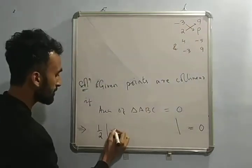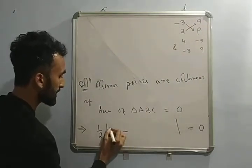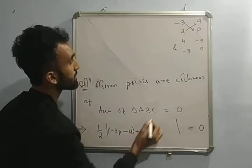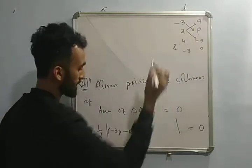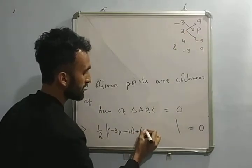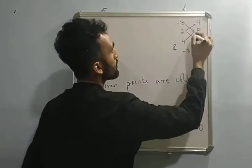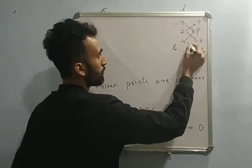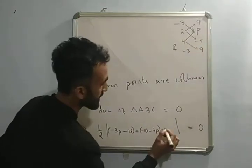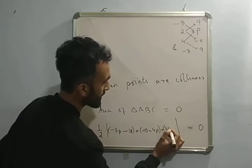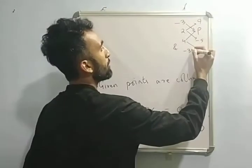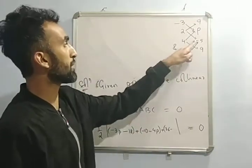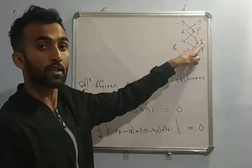Cross multiply: minus 3 into P is minus 3P. Subtract the cross: 2 nines are 18. Plus, 2 into minus 5 is minus 10. Minus, 4 into P is 4P. Plus, 4 nines are 36. Minus formula: minus 3 into minus 5 is 15 — minus minus is plus, so it's plus 15, which becomes minus 15.